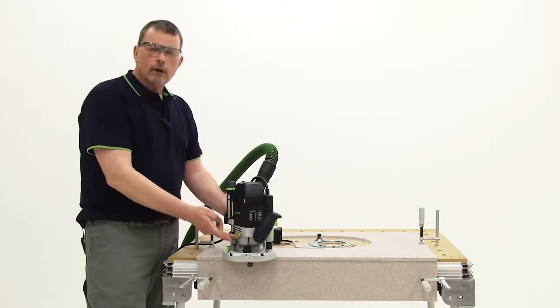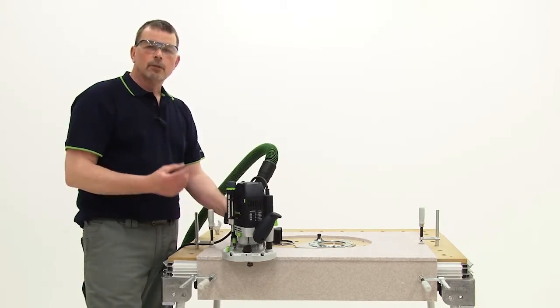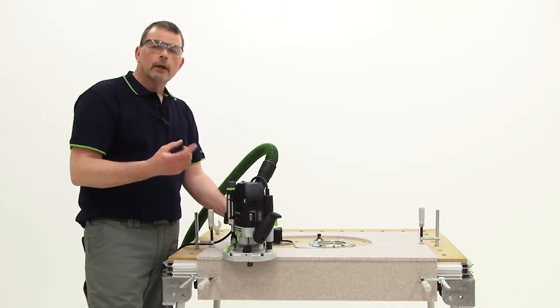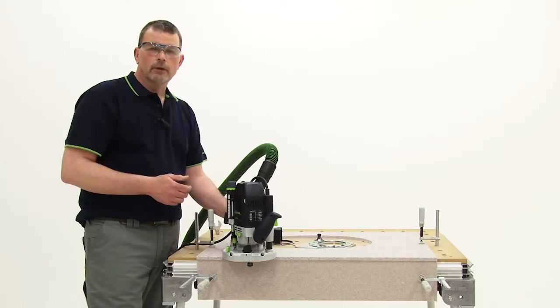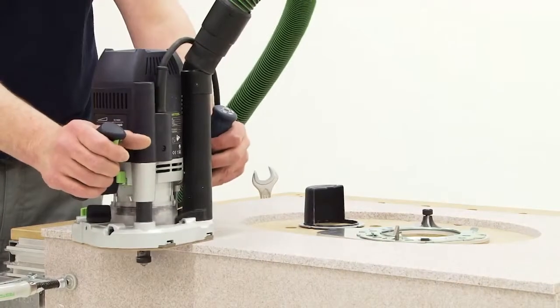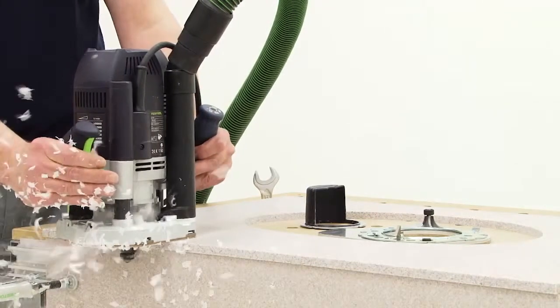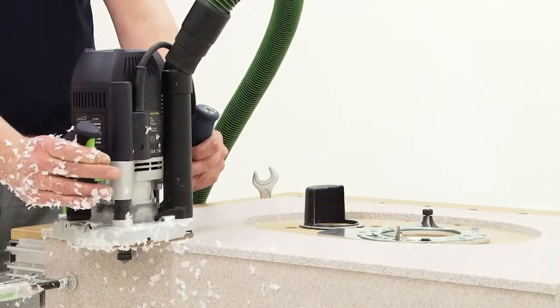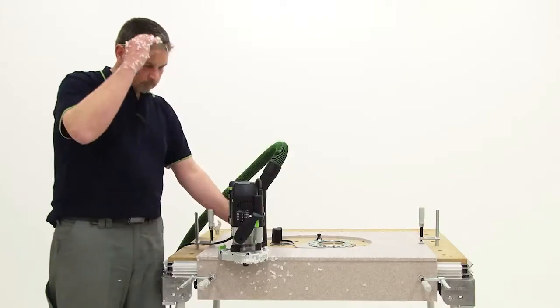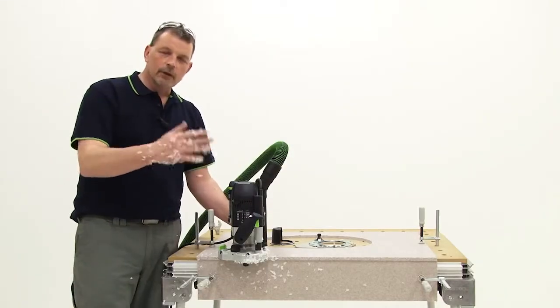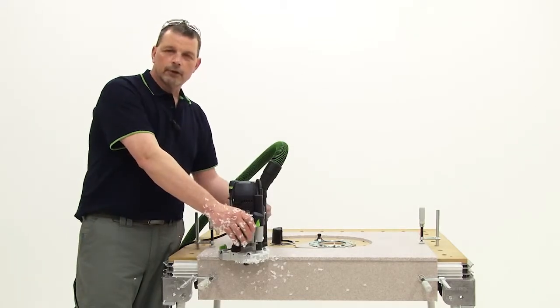You can see we have an extra shroud which comes down onto our dust extraction area which means that if we enclose the area again using solid surface we can withdraw the bulk of the waste that's produced. However some of the dust you can see will escape but with Festool we also have a solution for that as well.